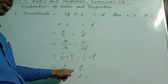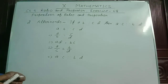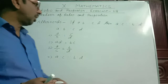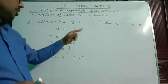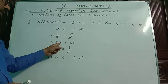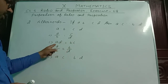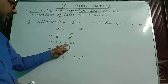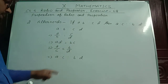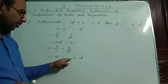The second property is the alternendo property. If a : b ∝ c : d, then a : c ∝ b : d. From a/b = c/d, we do cross multiplication to get ad = bc. We can rewrite this as a/c = b/d, and verifying by cross multiplication gives back ad = bc. Therefore, we write a : c ∝ b : d.